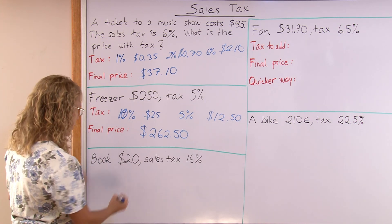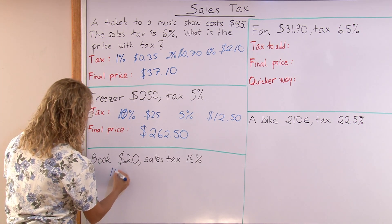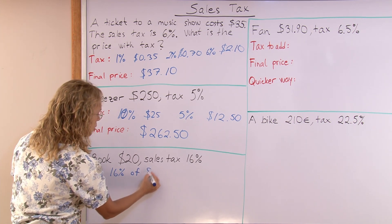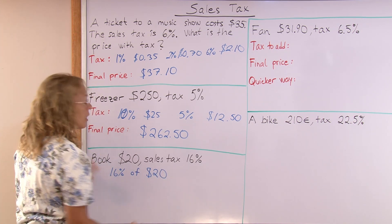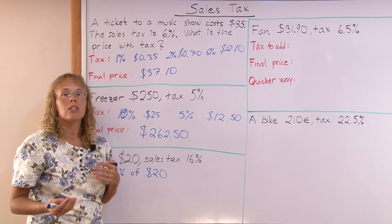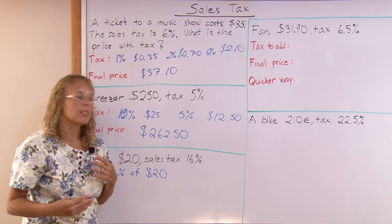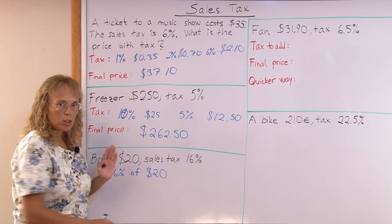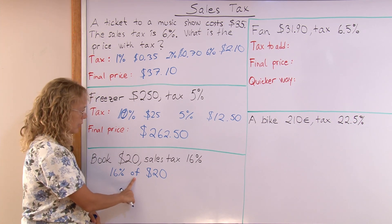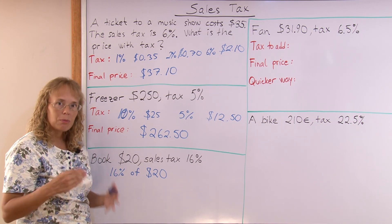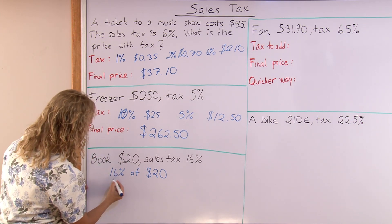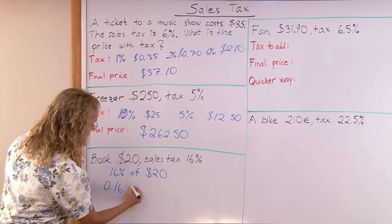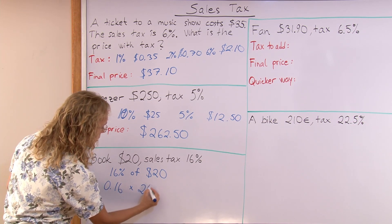I want to calculate 16% of $20.00, and this time I'm going to use decimals to show you another way to calculate. Let's first change the 16% to a decimal. The word 'of' translates into multiplication. 16% as a decimal is 0.16, times 20.